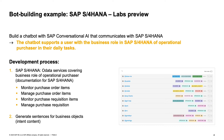We want to kick off the development process by choosing the OData services we require to cover the business role of operational purchaser. The available OData services and APIs are all documented in the SAP S4HANA documentation. We choose the specific OData services: monitor purchase order item, manage purchase order item, monitor purchase requisition items, and manage purchase requisition.